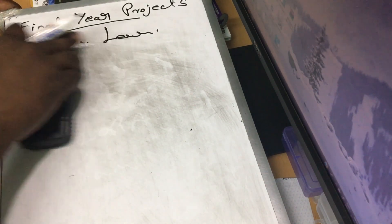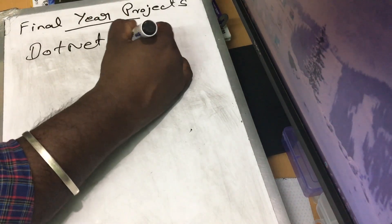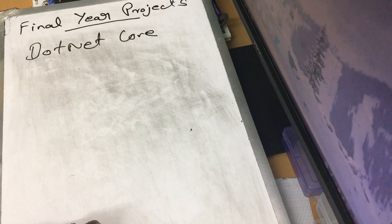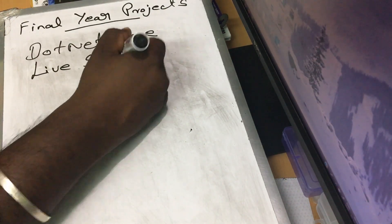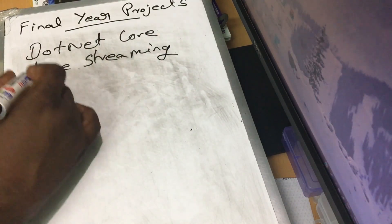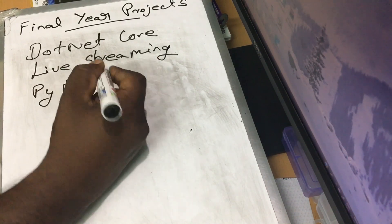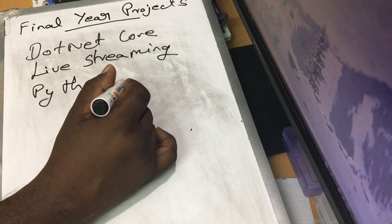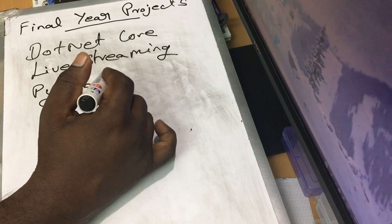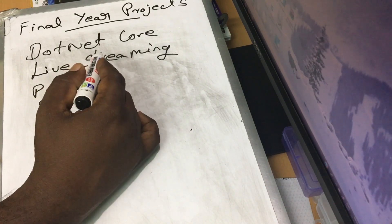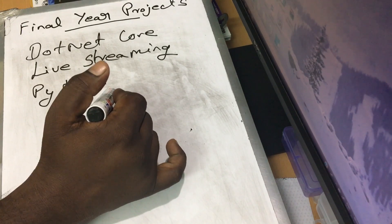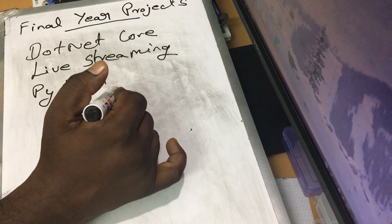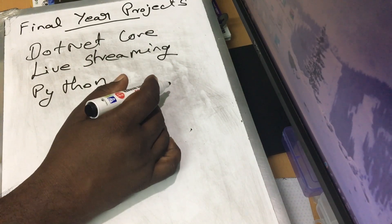There are also advances in .NET. Now we are going to use .NET Core for live streaming applications. It is Python — although it is still old, it is still a standard. So you can do IoT projects, web applications, or desktop applications using Python. Python can support all types. What about Data Science and artificial intelligence? Python is used for that too.